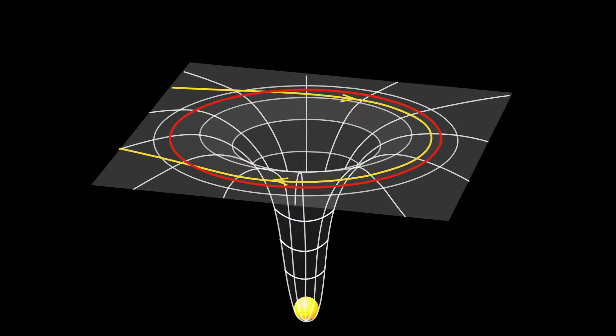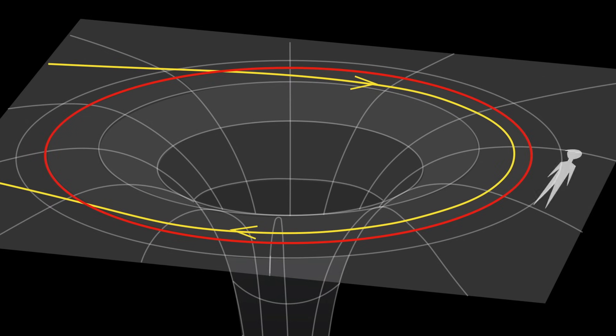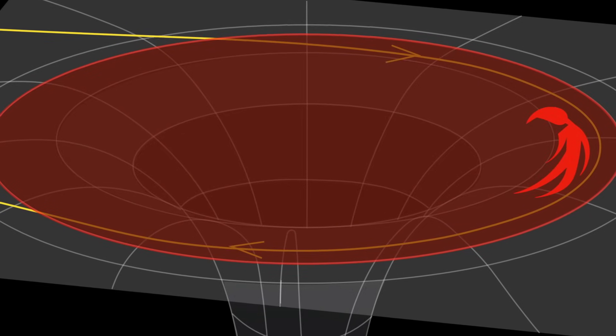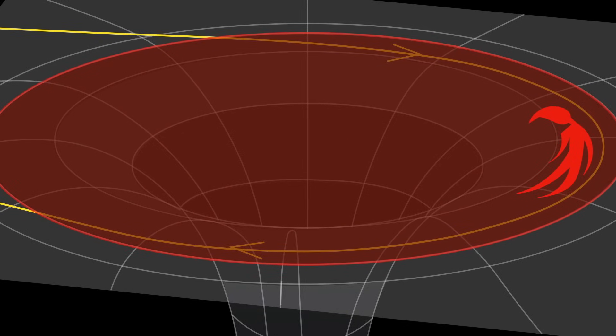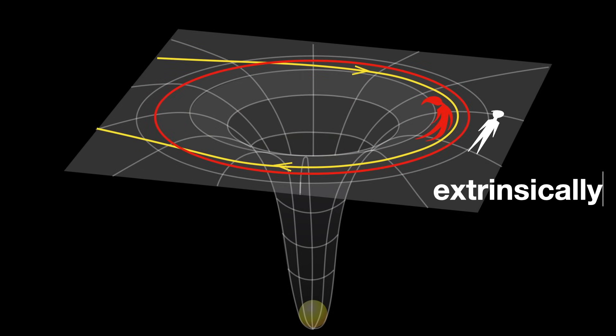From our perspective, in flat space, the path looks curved. But to the light itself, and to any observer living within that curved region, the path is still straight. Mathematically, this is exactly what an embedding captures. The light's path remains straight, intrinsically, even though it appears extrinsically curved, when embedded into a larger reference space.